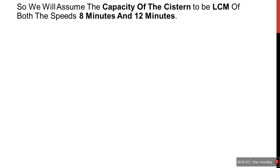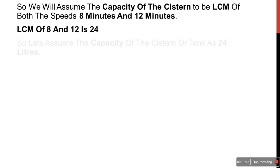We will assume the capacity of the system to be the LCM of the speeds — 8 minutes and 12 minutes. This is for simplicity and this is the shortcut method to use. We just assume some capacity for the tank equal to the LCM of both speeds 8 and 12. The LCM of 8 and 12 is 24.